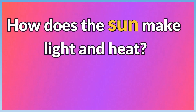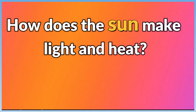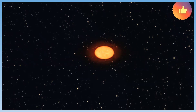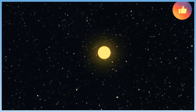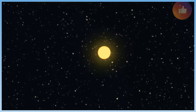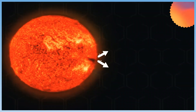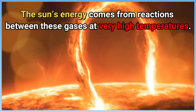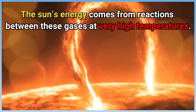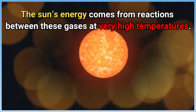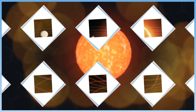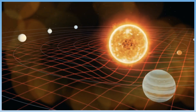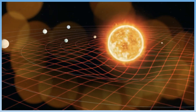How does the sun make light and heat? The sun is a star, like all stars. It is made of gases — mostly hydrogen and helium. These gases get so hot that they give off light. The sun's energy comes from reactions between these gases at very high temperatures. These reactions also make large amounts of light and heat.